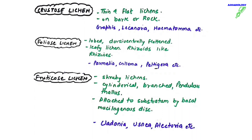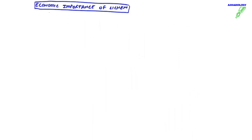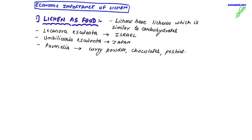Lichens have great economic importance. They are used as food — lichens contain lichenin, which is similar to carbohydrates. In cold areas where no vegetation is possible, lichens grow and people eat them as a source of food, since lichenin provides energy. An example is Lecanora esculenta, used as a source of food in Israel.